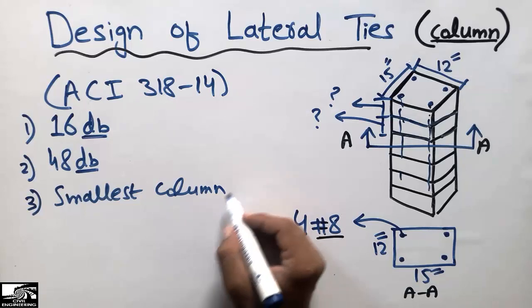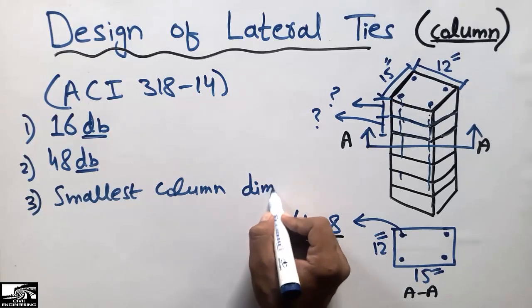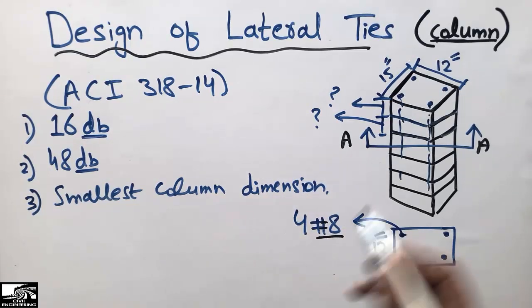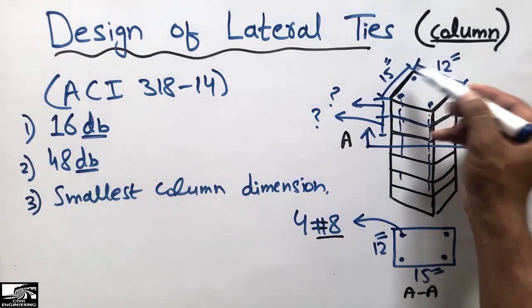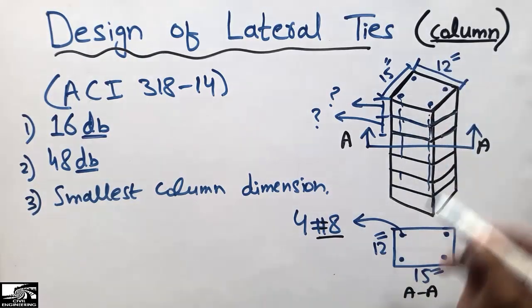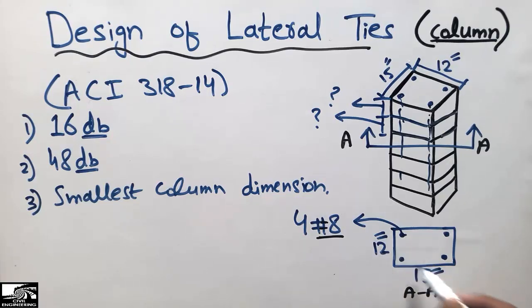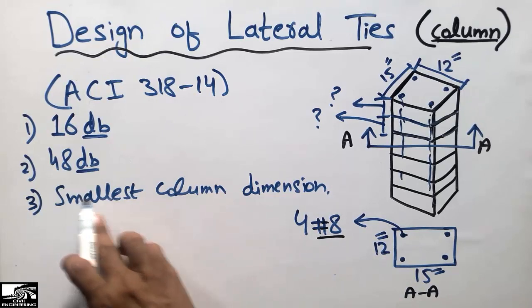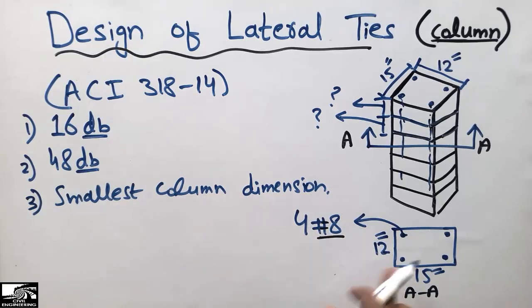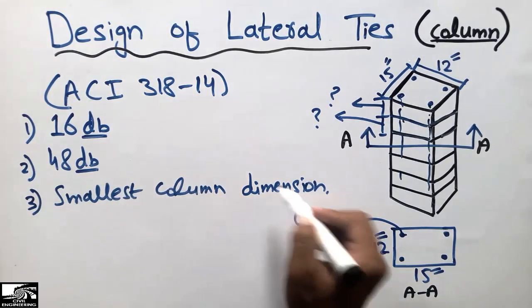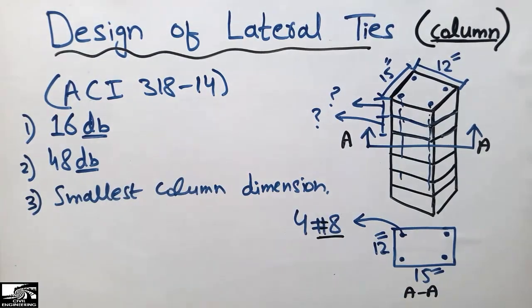The third formula is simply the smallest column dimension. Looking at the cross-section, the two column dimensions are 15 inches and 12 inches. You choose the smaller of the two column dimensions for this formula.